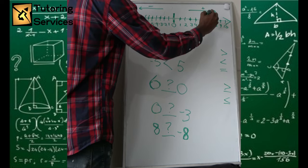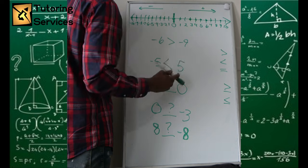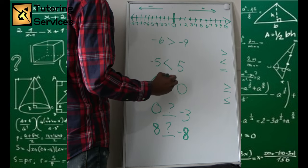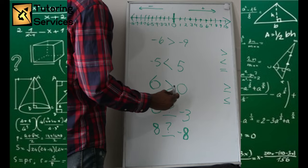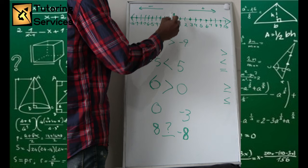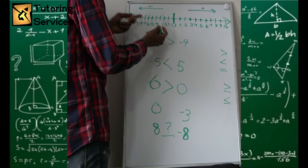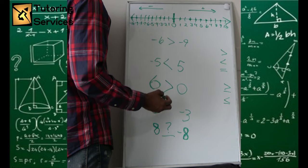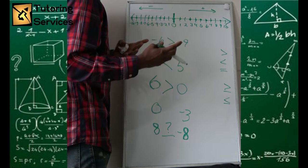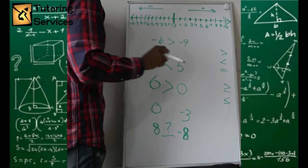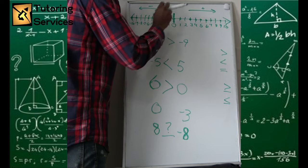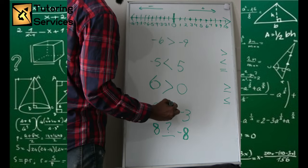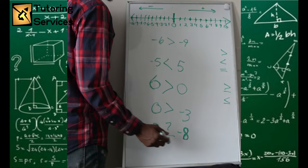What about six and zero? Any positive number is going to be greater than zero, so six is greater than zero. Now what about zero and negative three? Zero is here and negative three is here. Any negative number is going to be less than zero, so negative three is less than zero. And with zero being more in the positive direction than negative three, zero is greater than negative three.